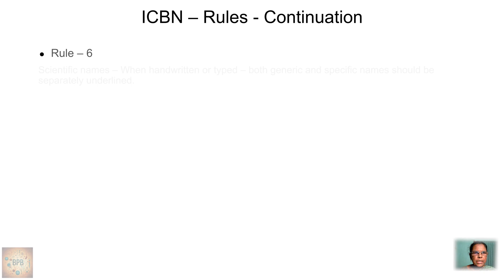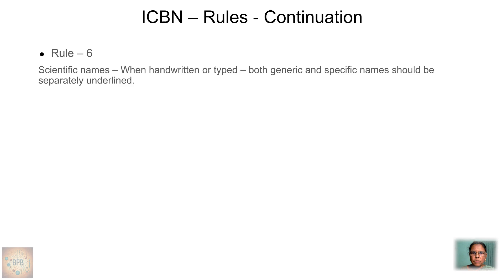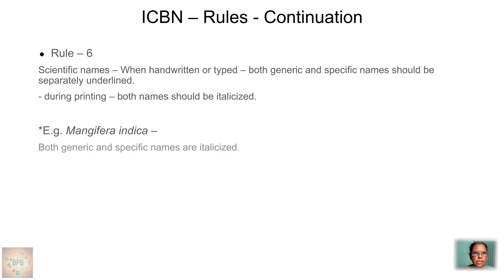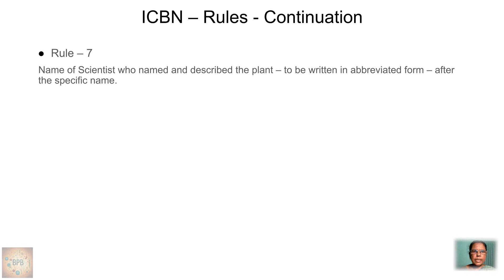Rule 6 — when scientific names are handwritten or typed, the generic name and specific name should be separately underlined; but during printing, both names should be italicized. For example, Mangifera indica is italicized here because it is printed. Rule 7 — the name of the scientist who named and described the species should be written in abbreviated form after the specific name; this is called author citation. For example, Mangifera indica L. — here 'L.' represents Carolus Linnaeus, who first named and described the plant.